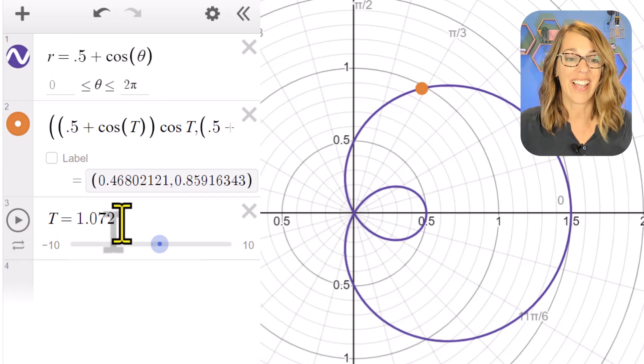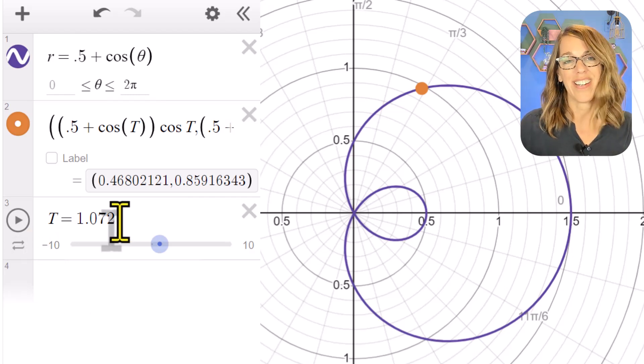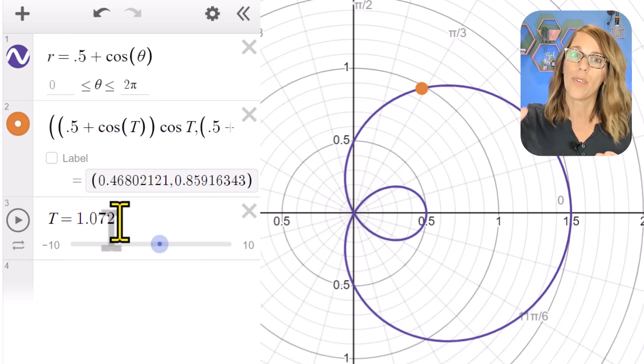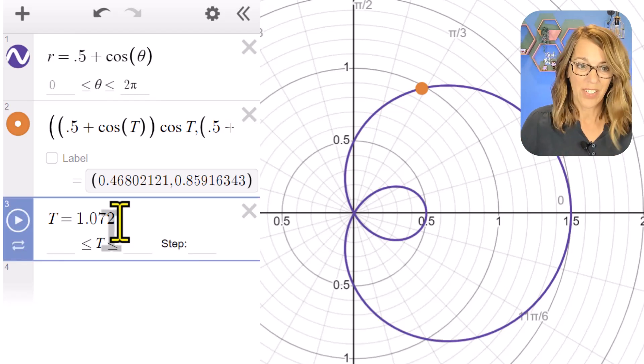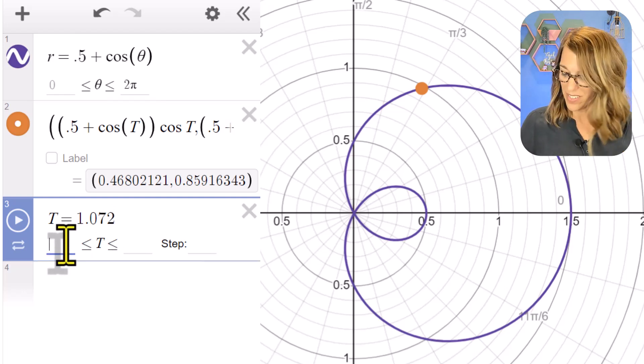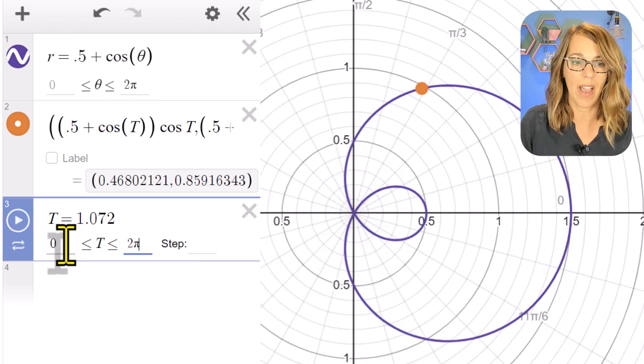Let's mess around with our slider. I don't want it to go between -10 and 10. My parameters are between 0 and 2π—one full rotation around that circle. So I'm just going to click up where I've got T equals, and it gives me these options to change my parameters. I'm going to do 0 to 2, and I just spell pi, pi.